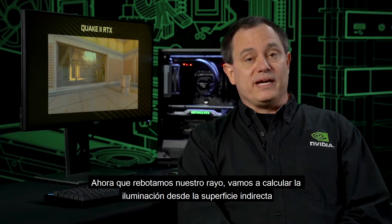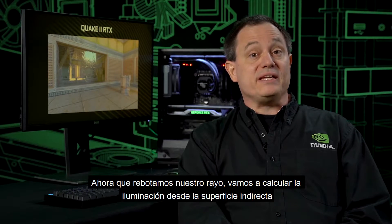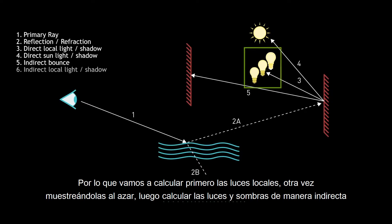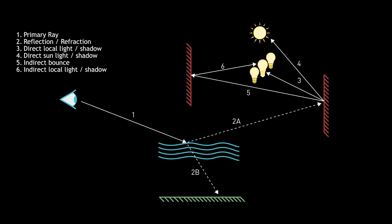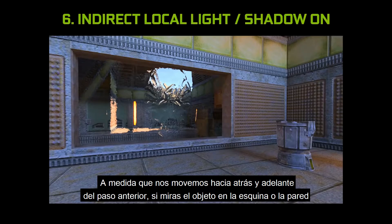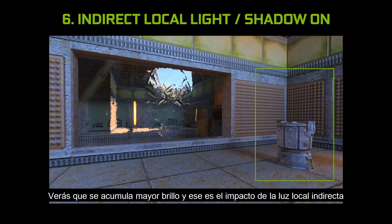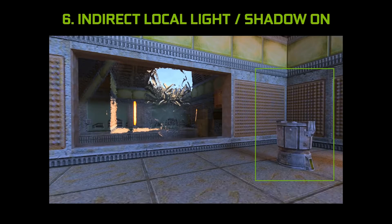Now that we've bounced our ray, the first step is to compute lighting from that indirect surface. We're going to compute local lights first, again randomly sampling them, and then computing light and shadow in an indirect manner. As we toggle back and forth between the preview step, if you look at the object in the corner or the walls, you're seeing it accumulate a bit more brightness — that's the impact of that indirect local light.